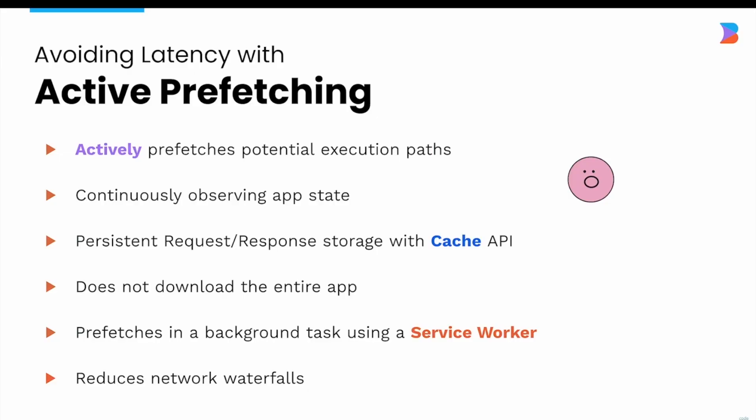Up until this point we've talked about fairly common meta framework features, and many meta frameworks built on the same underlying framework offer the same features. What's unique about Quick City is not slight differences in meta framework features, but how it takes advantage of the Quick framework itself. One thing that's been fun to build out is its ability to actively prefetch any potential execution paths.